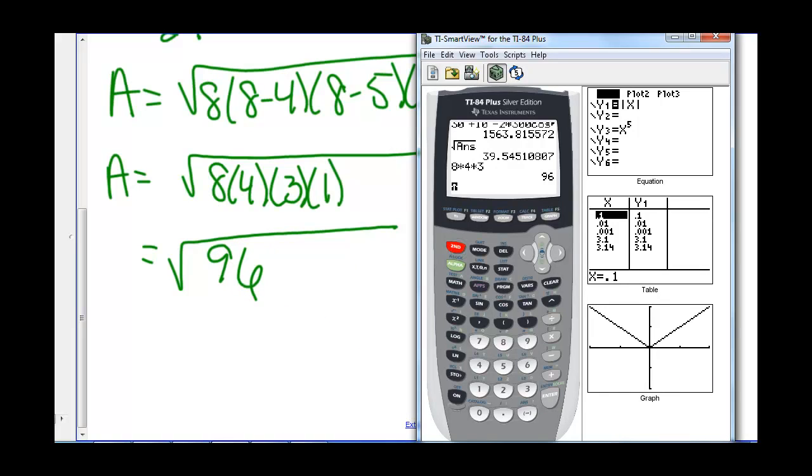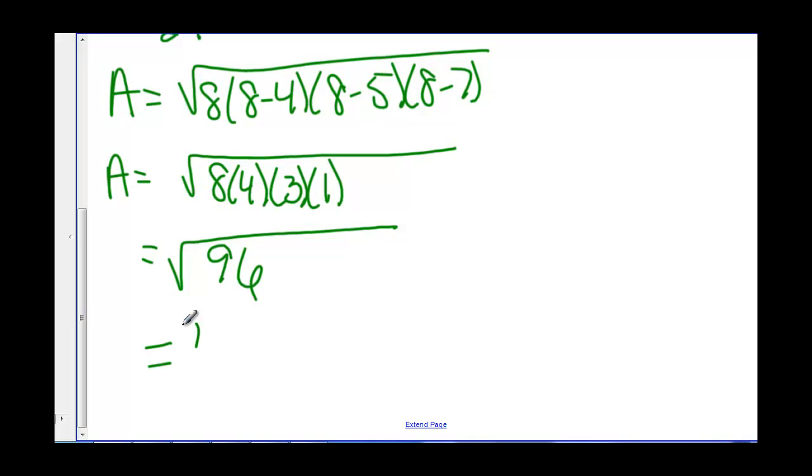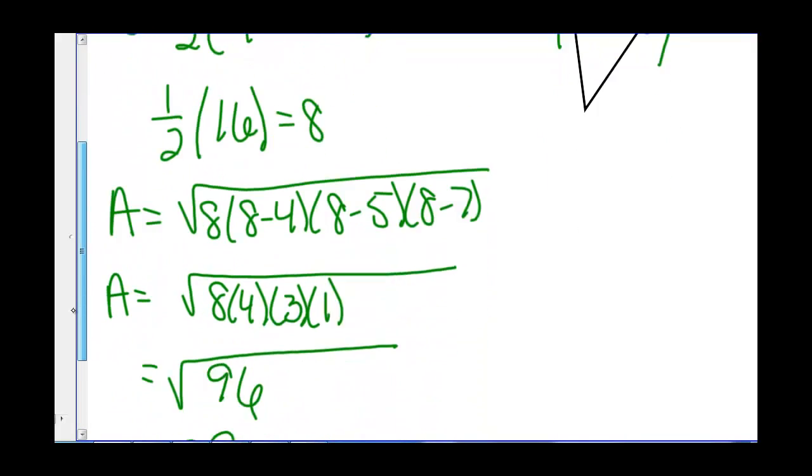So we take the square root and we get 9.8. So the area is about 9.8, whatever units we were using.